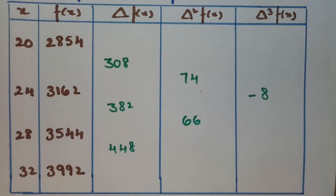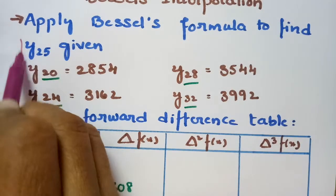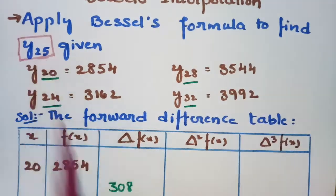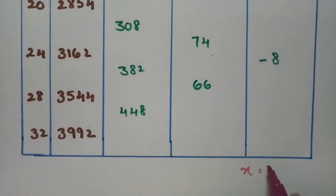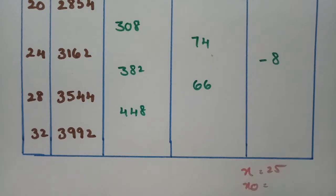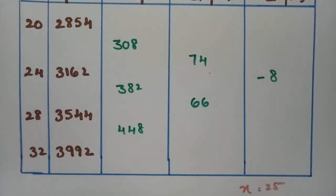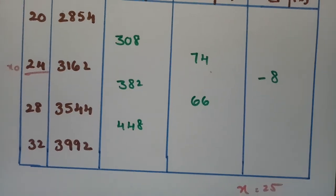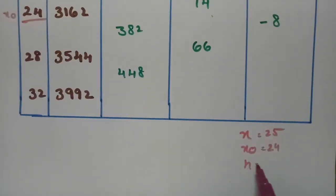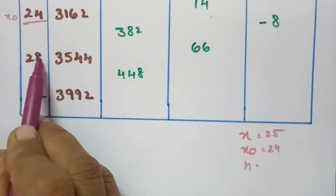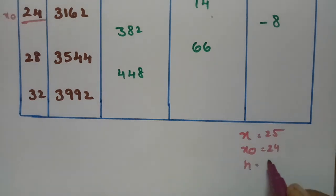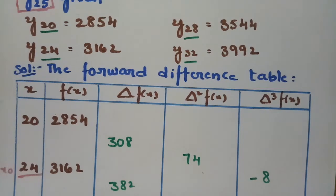Now we have to find x naught. We need y at 25, so x equals 25. The nearest value is x naught, and since 24 is the nearest value, x naught equals 24. The step h equals x2 minus x1, that is 32 minus 28, so h equals 4.